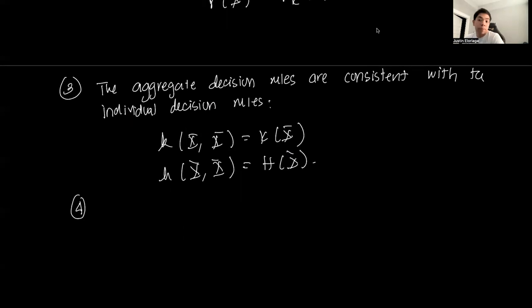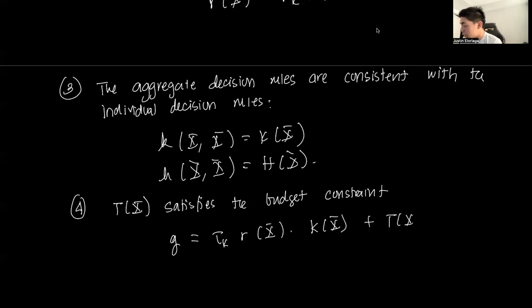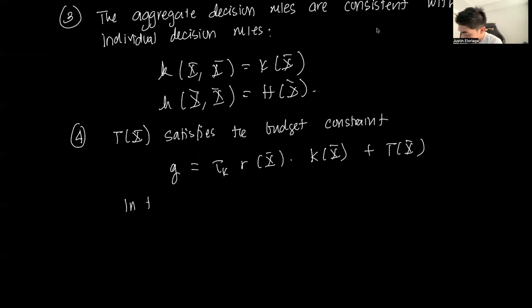And any other conditions imposed: in this case, we have taxes, so we need to impose that the government's constraint balances. So T(X) satisfies or allows the government's budget constraint to balance. G equals tau_k * r(X) * K(X) plus T(X). So in this way, the government budget is balanced.